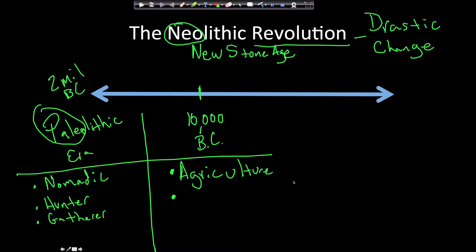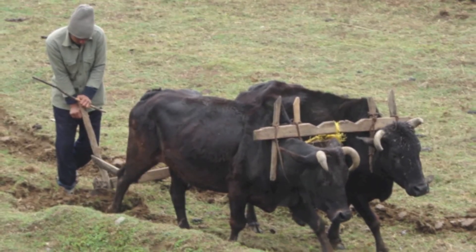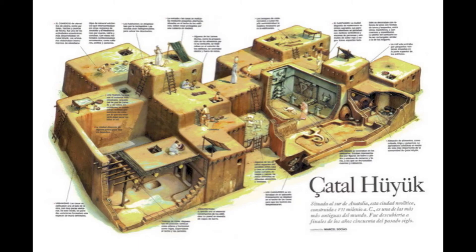The main thing in the Neolithic Revolution is the advent of agriculture — people started farming. They also domesticated animals, meaning humans could use them: an ox pulling a plow, raising cows for milk and meat. Because we moved away from a nomadic lifestyle and were no longer hunter-gatherers, practicing agriculture meant living in permanent settlements.